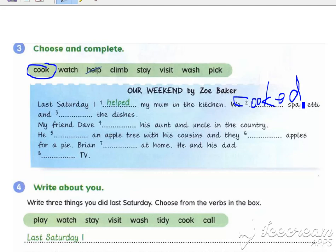Now, let's complete this exercise. Трабо дописати вправу. Use... Watch... Watched... Climbed... Stayed... Залишатися... Visited... Washed... And picked... Збирати яблука.